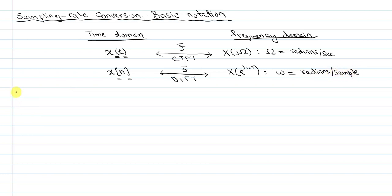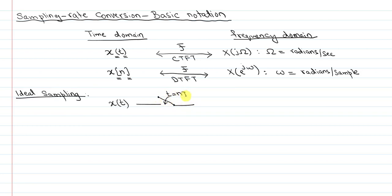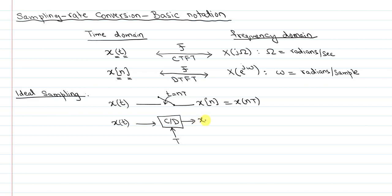In addition, we'll use the following representation for ideal sampling. We'll sometimes use X of t with a switch notation that closes every T seconds, giving us X of n, which is simply samples of X of t every T seconds. Or we'll use a block representation with a continuous-to-discrete block, using this arrow with time T to get X of n. So in notation, T will be the sampling time, for uniform point sampling with units of seconds.